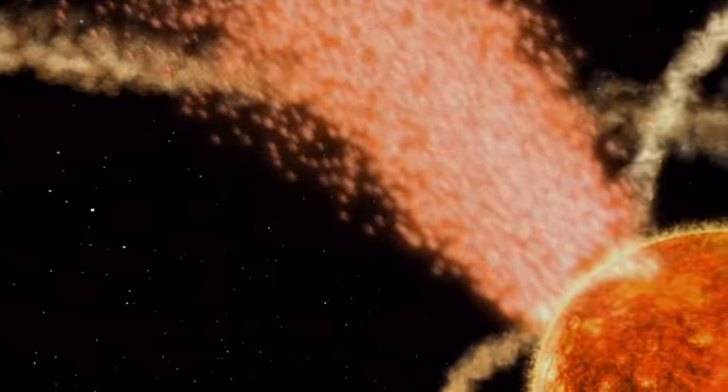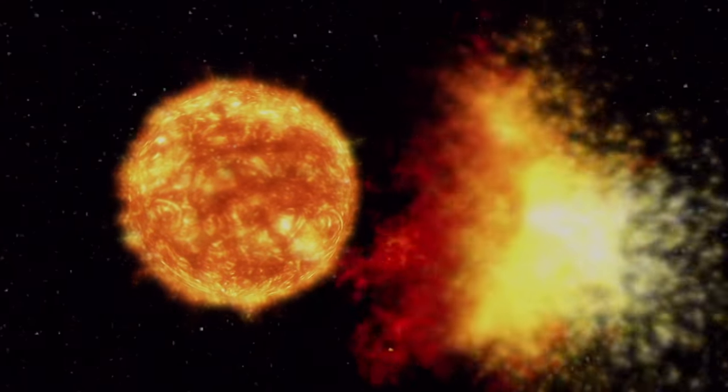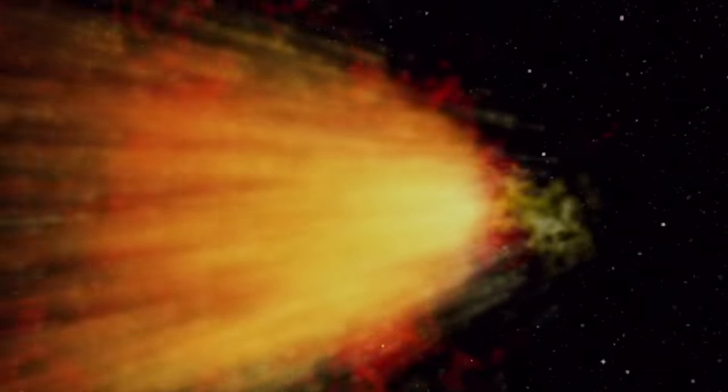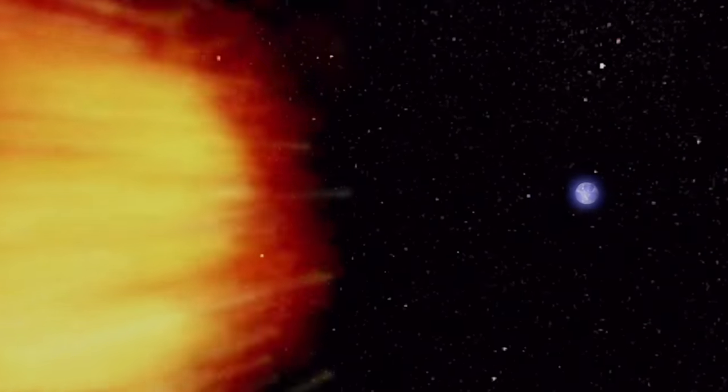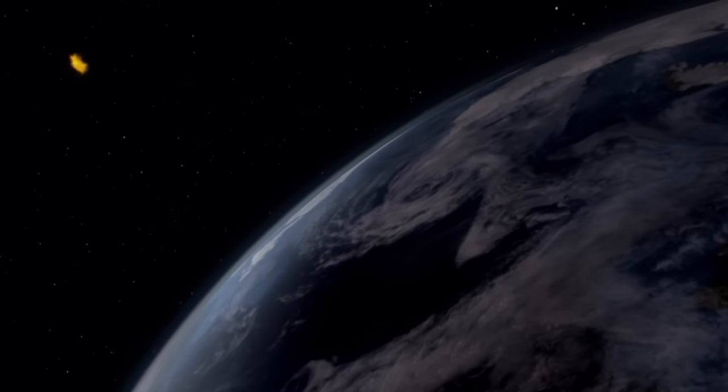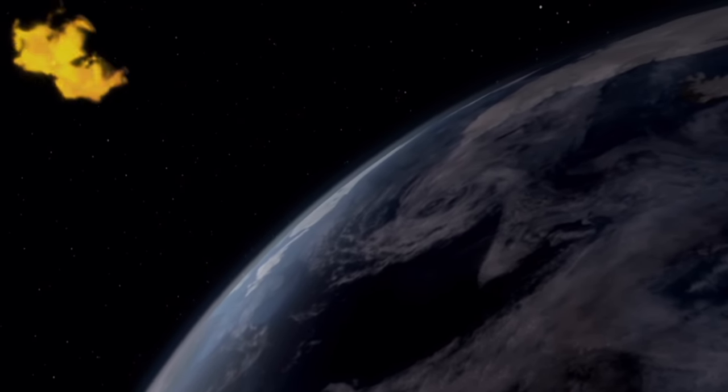Minutes behind each flare is a gigantic wave of radiation. The wave contains huge amounts of electromagnetic energy. X-rays and gamma rays straight from the surface of the Sun. The wave travels at the speed of light and smashes into the Earth's upper atmosphere, which heats and expands.